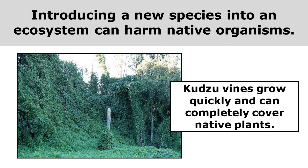Introducing a new species into an ecosystem can harm native organisms. Kudzu vines were introduced into this ecosystem, and kudzu vines grow quickly and can completely cover native plants. That kills the native plants they cover and reduces the population of plants in this ecosystem.